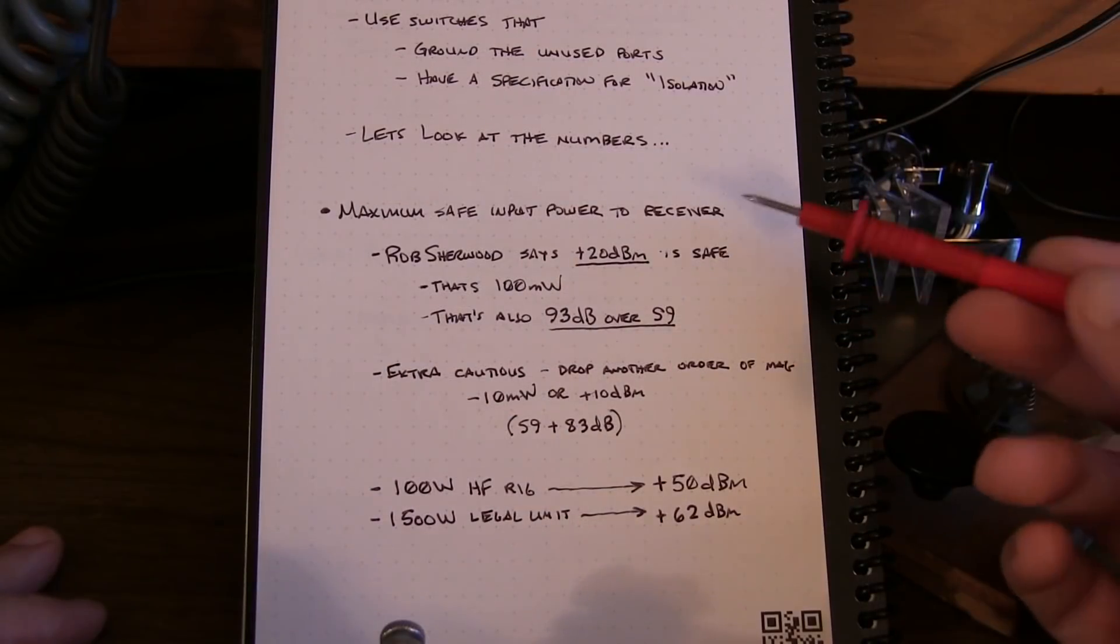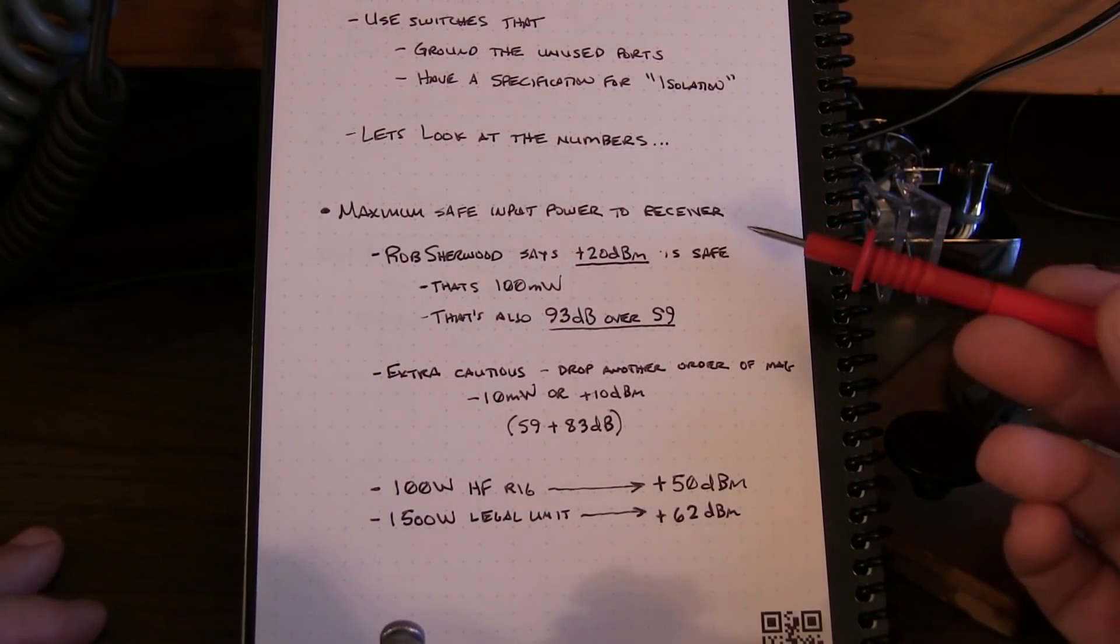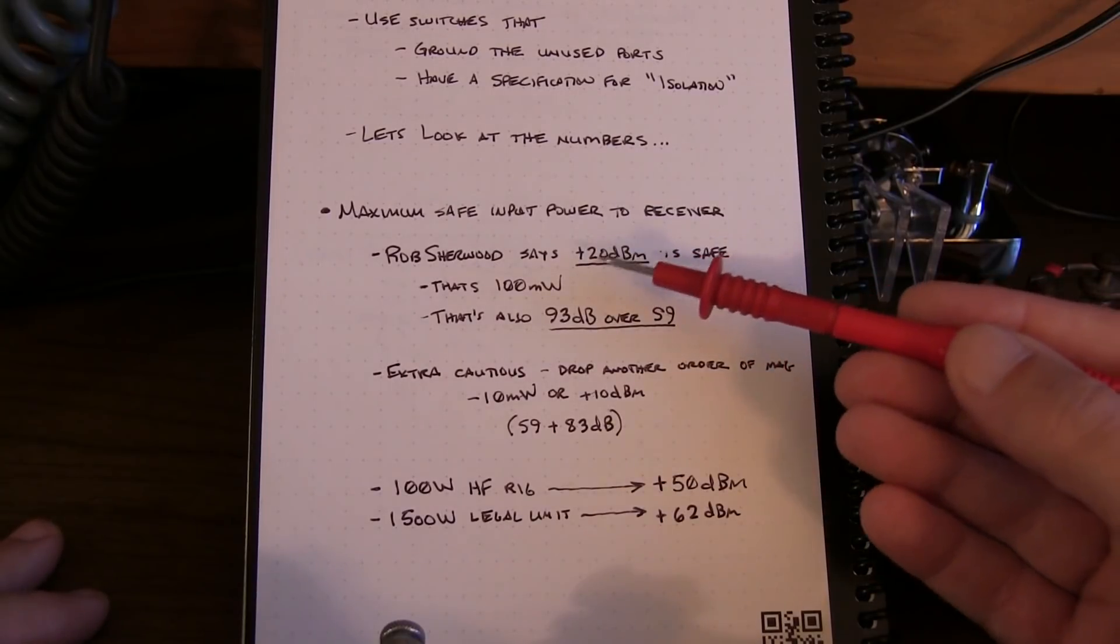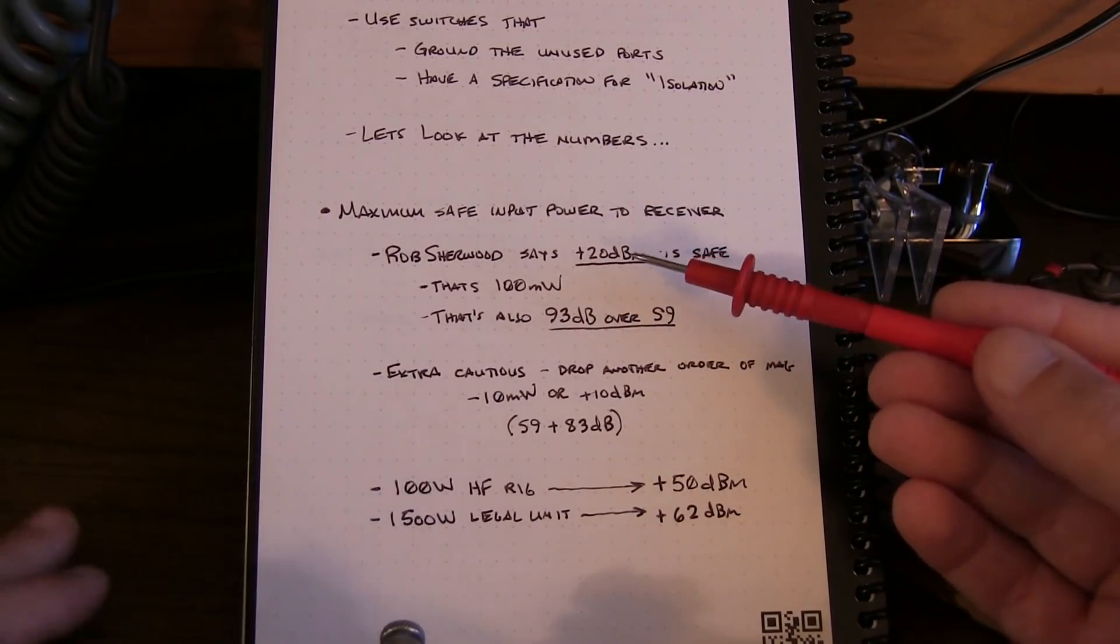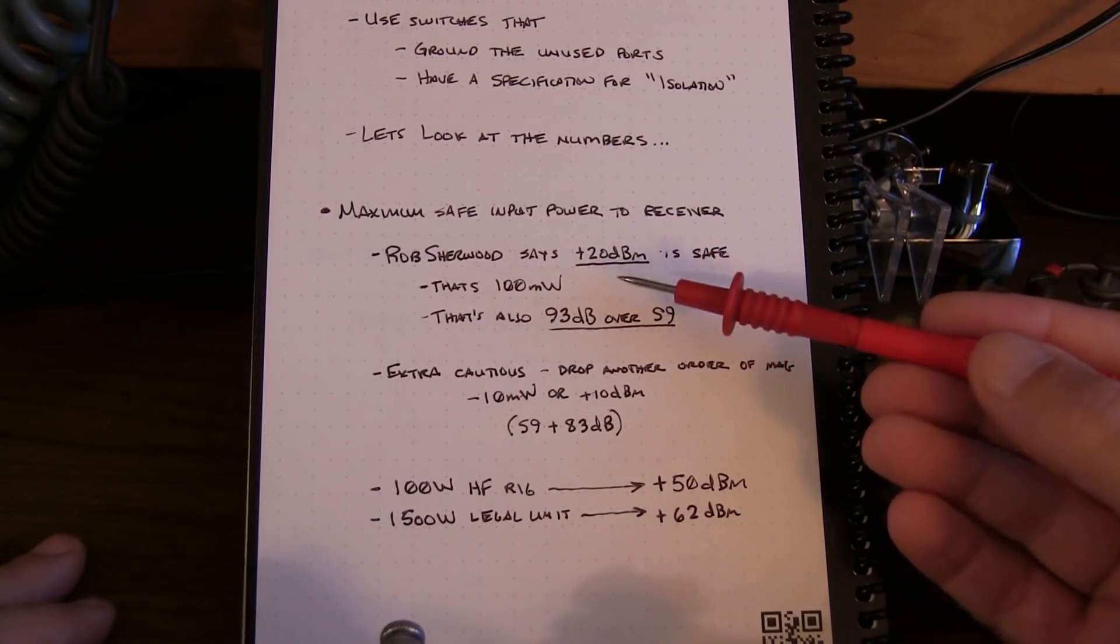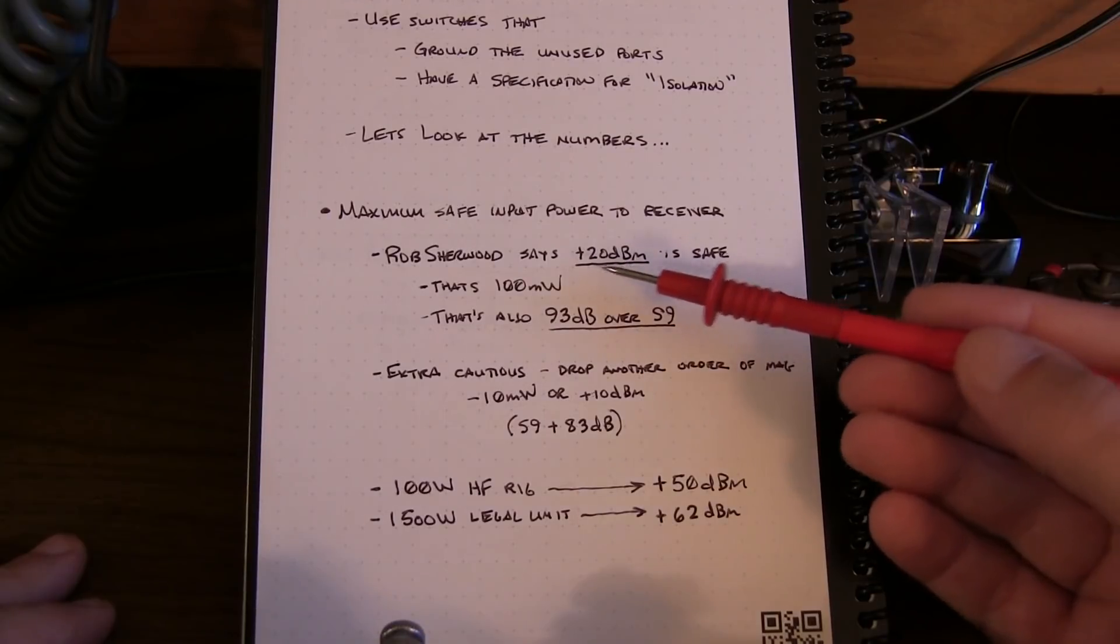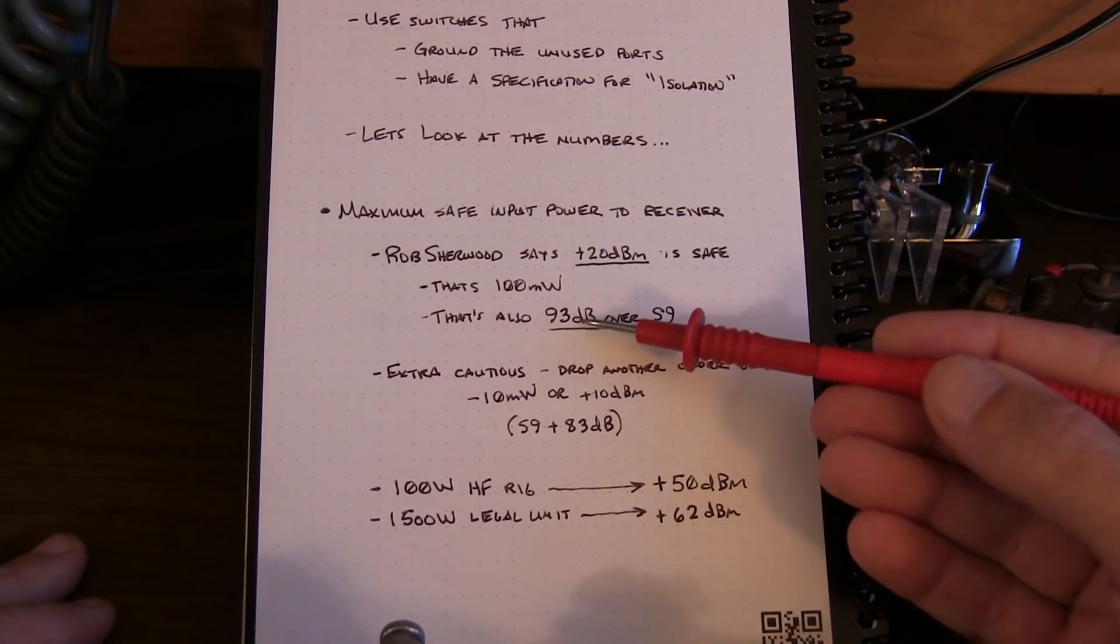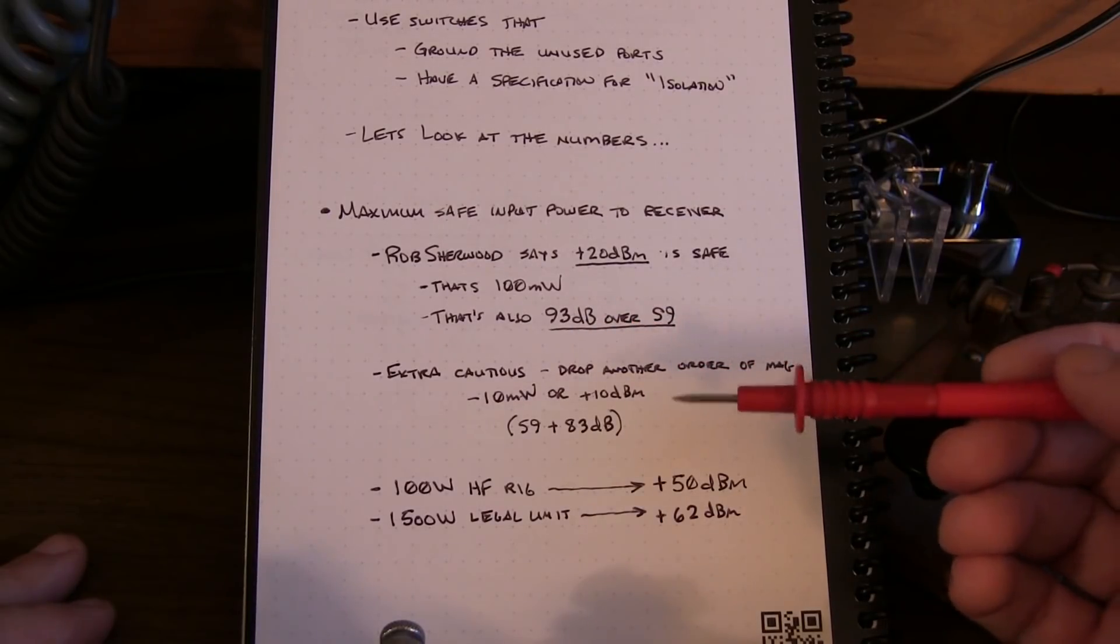Now in order to get an idea of the maximum input power to a receiver, I kind of went to the expert, Rob Sherwood, and he said that every transceiver he's ever looked at can very safely take a plus 20 dBm input. So that's 100 milliwatts. Another way to think about that is that's 93 dB over S9.